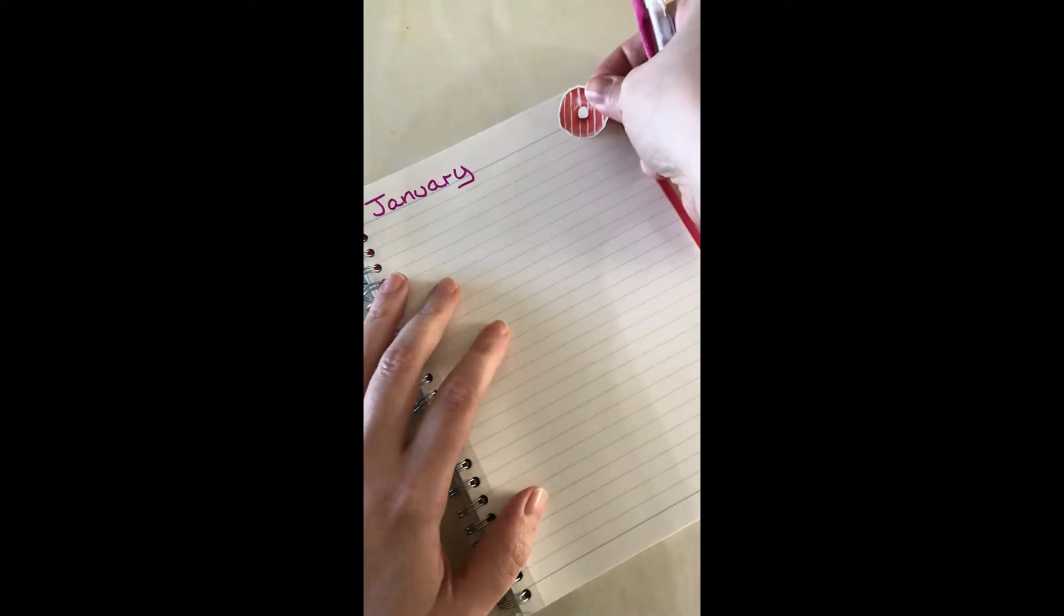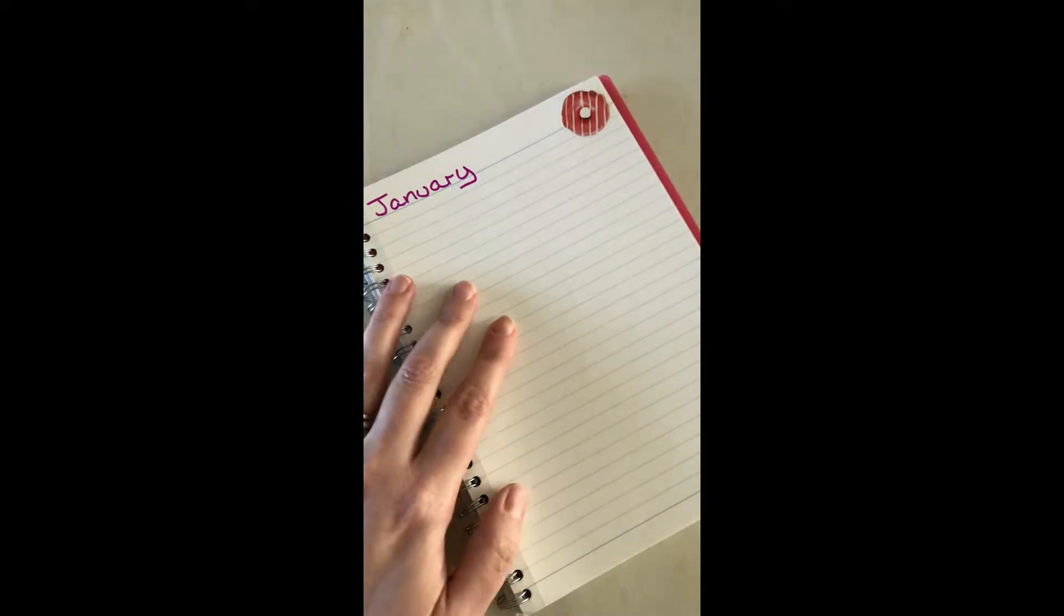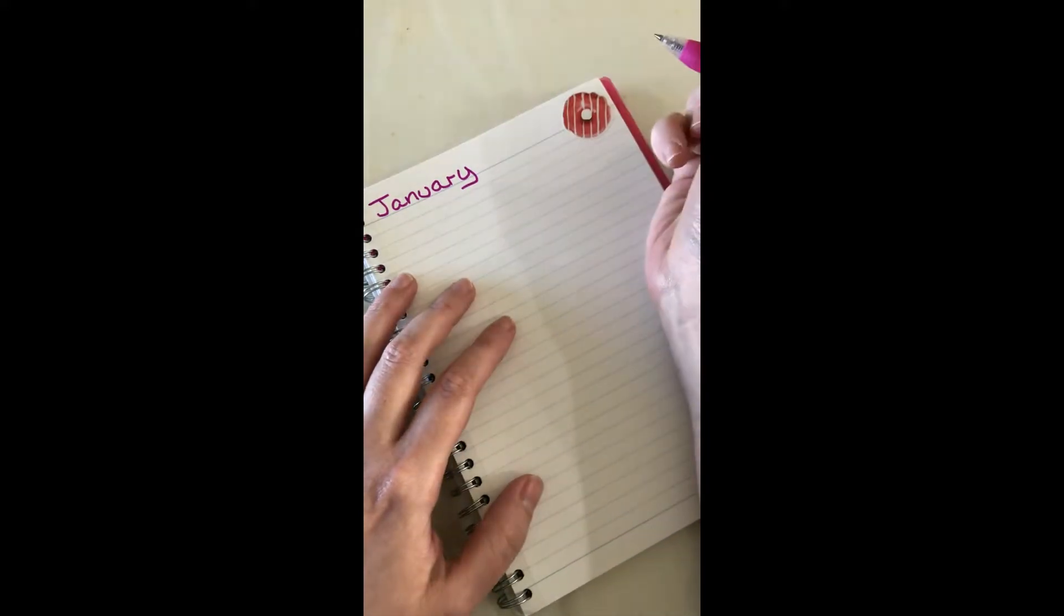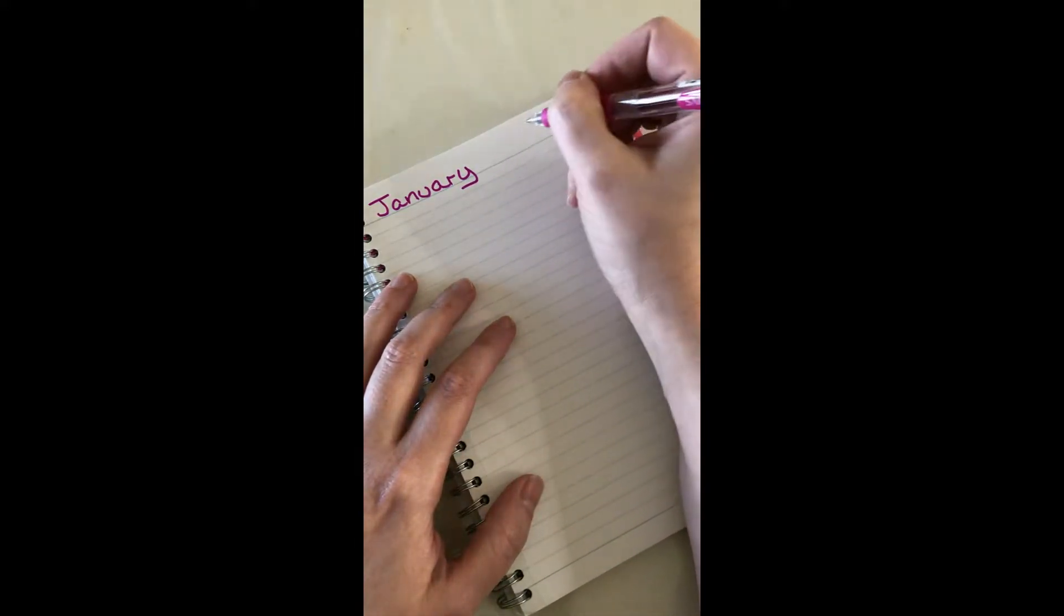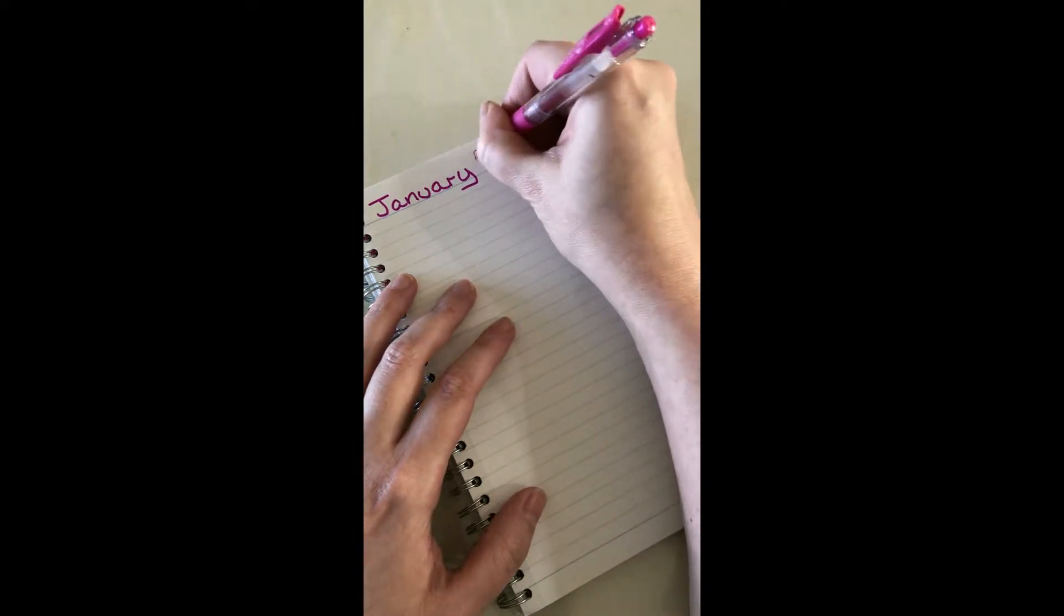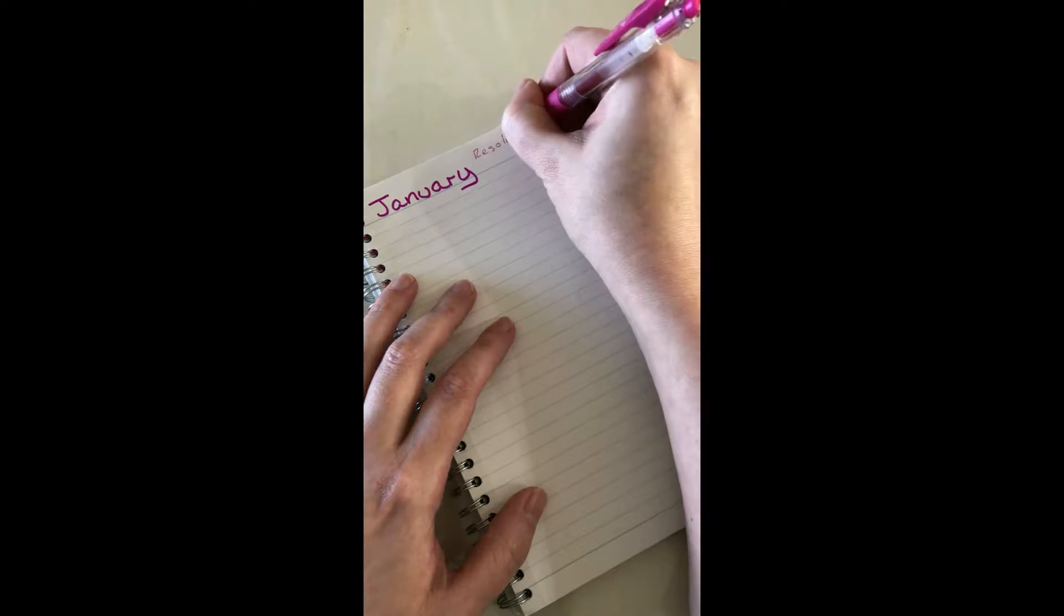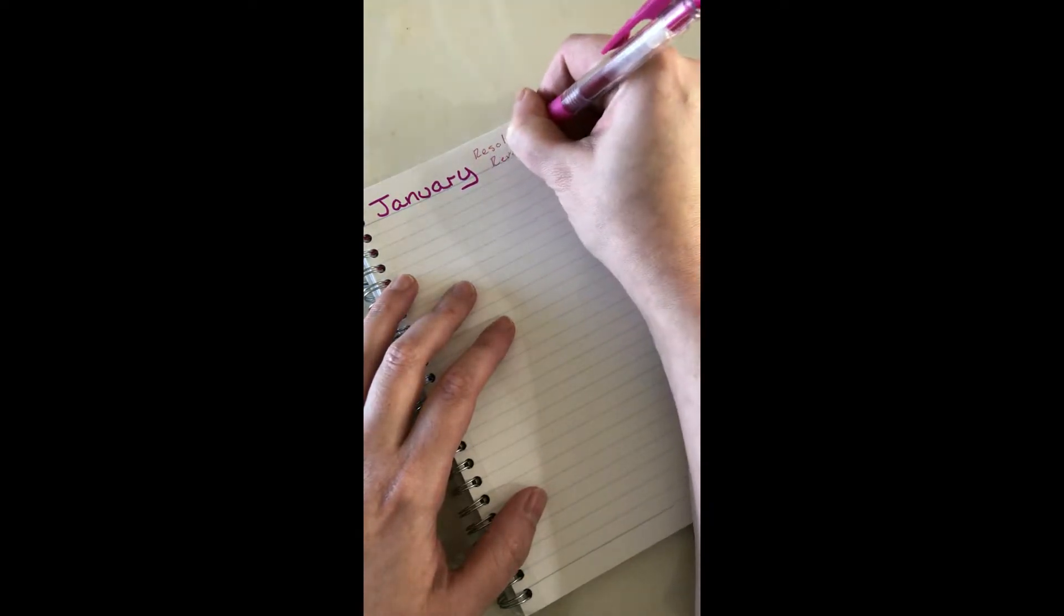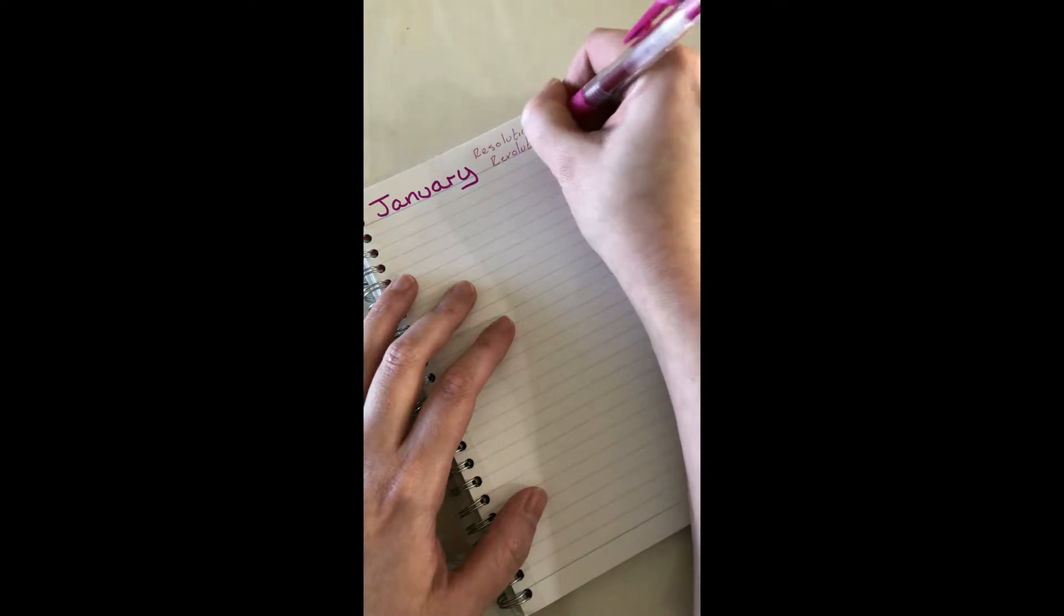I like to have fun with this, so maybe I'll put a donut sticker in the corner and sometimes I give a little tagline or slogan for the month. Maybe January will be the resolution revolution because maybe I'll be able to maintain my resolutions for more than two months this time.